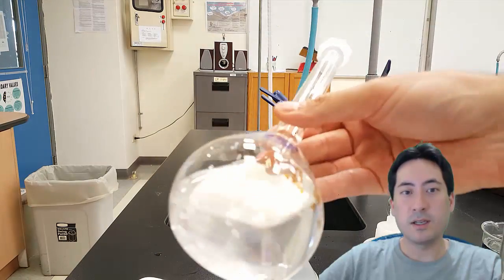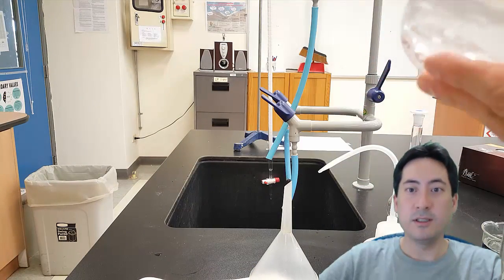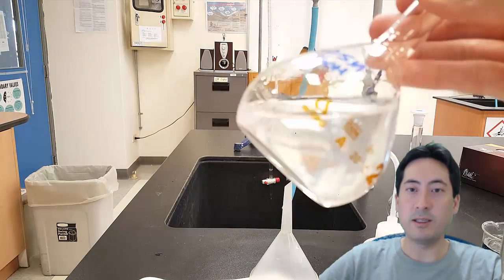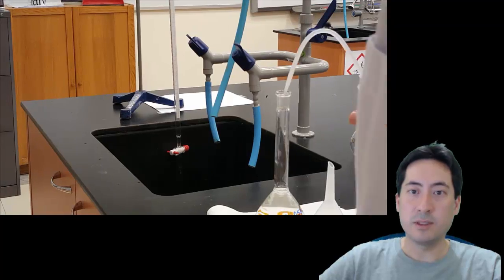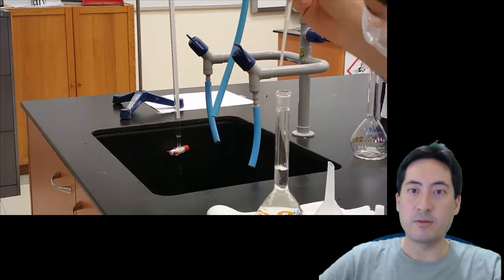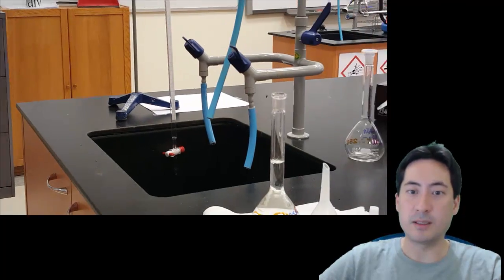So once the sodium hydroxide has fully dissolved in the water, you can then put it back on the bench and at eye level, make it up to the mark with enough water. And so then you've added enough water, then you can make sure it's fully mixed.